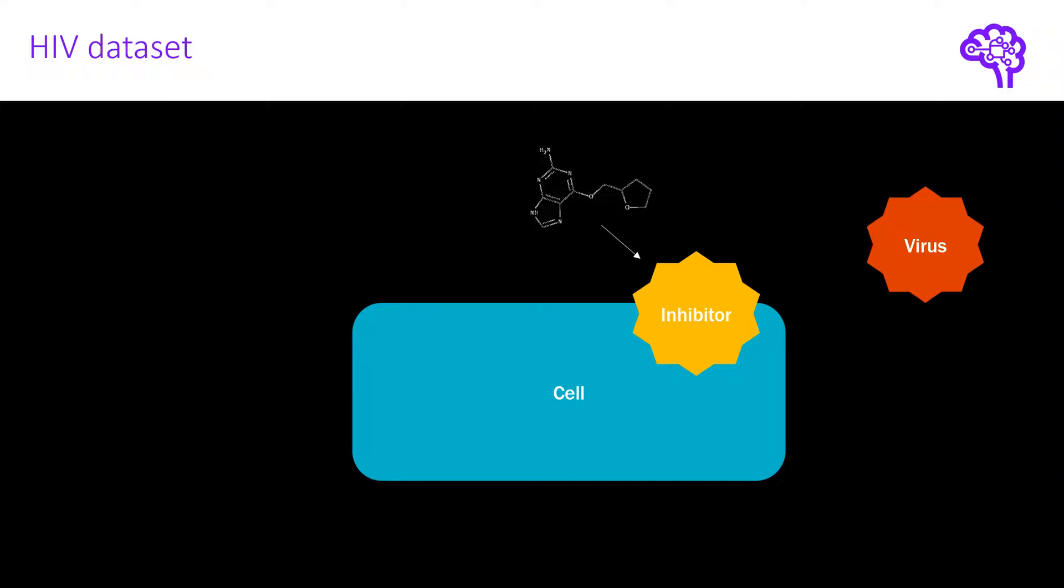With this dataset I want to build in the first step a GNN that is able to classify whether molecules are suitable HIV inhibitors. And in the second step I want to build a generative model that can create new molecules that are potentially HIV inhibitors.